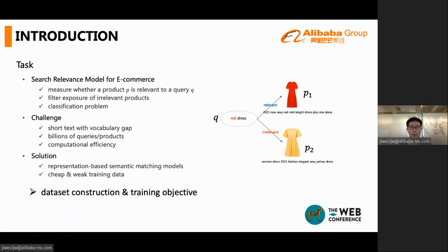Moreover, for online serving, high efficiency is required that we cannot use complicated models like interaction-based ones. Therefore, previous solutions mostly adopt representation-based semantic matching models like DSSM. For billions of queries and products to deal with, it is impossible to train the model with only human-labeled samples. Therefore, a way to use cheap and abundant training data is necessary.